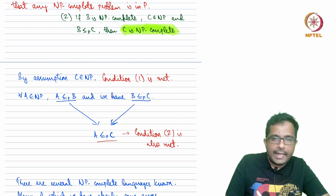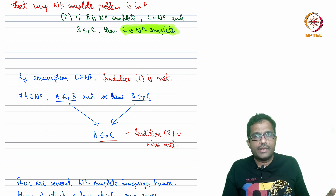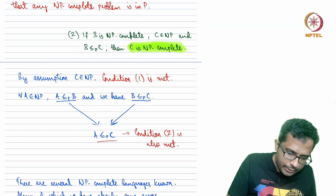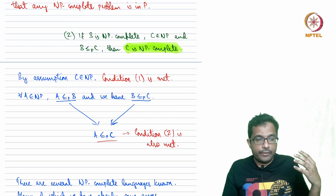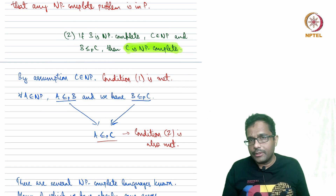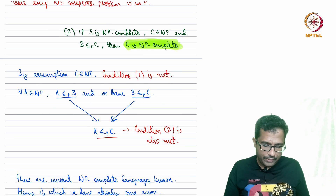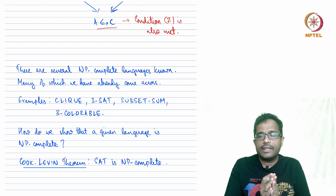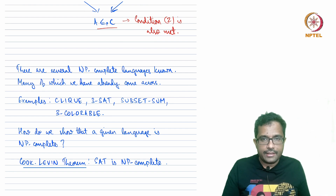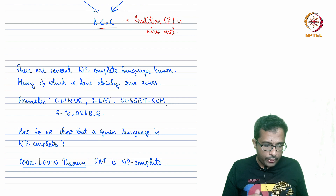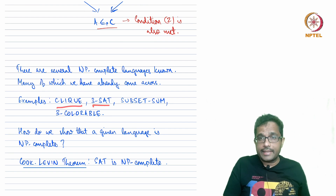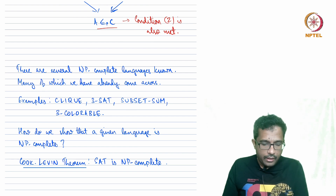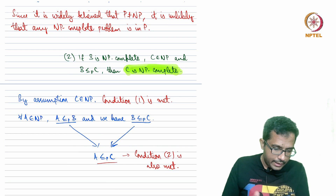These are the two conditions for C to be NP-complete, and thus C is NP-complete. This gives us another way to show that a language is NP-complete. Now we know several NP-complete languages — these are considered the hardest problems in NP — and many of them we have already seen in this course, even though I did not explicitly say they were NP-complete. For instance: CLIQUE is NP-complete, 3SAT is NP-complete, SAT is NP-complete, SUBSET-SUM is NP-complete, and 3-COLORABLE is NP-complete. All of these we have talked about many times in this course already.